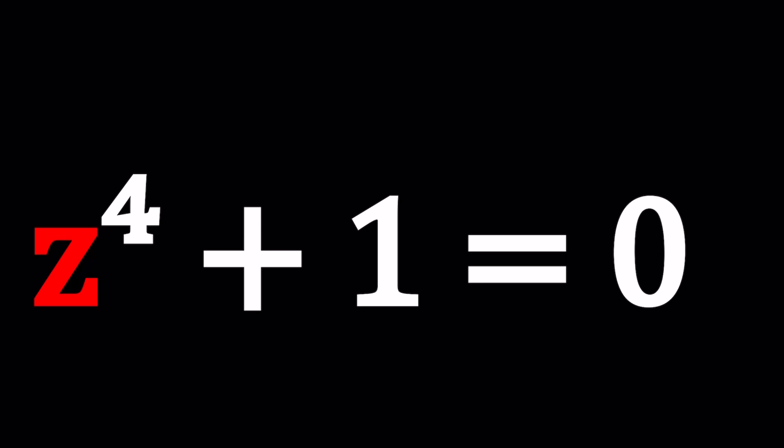We have z to the fourth power plus one equals zero and we're going to be solving for z. So z is a complex number whose fourth power plus one is equal to zero. This should not come as a surprise because z does not have to be a real number. That's why its fourth power can be negative. I'll be presenting two methods and let's start with the first one.